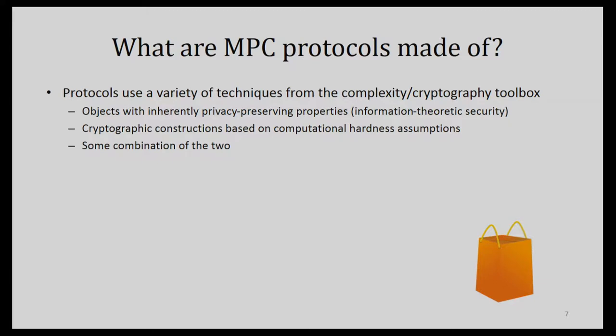Multi-party computation protocols are cryptographic things using techniques from computational complexity and cryptography. There are two kinds of security: unconditional or information-theoretic security, and security that depends on computational hardness assumptions — such as assumptions that certain functions have no efficient algorithms, related to the P versus NP question. Every protocol has a different set of assumptions; these are pretty complex objects in the world of cryptography compared to things like digital signatures or symmetric encryption.